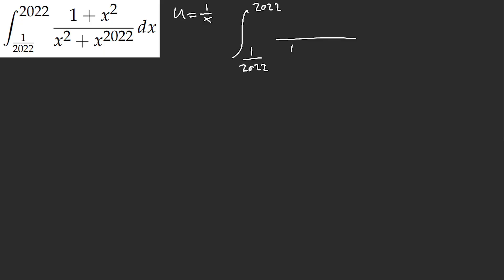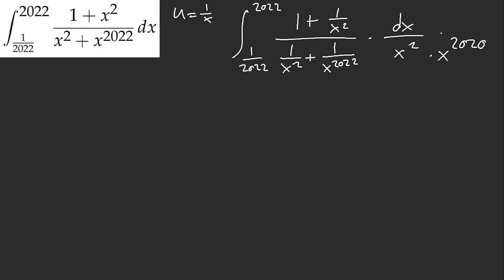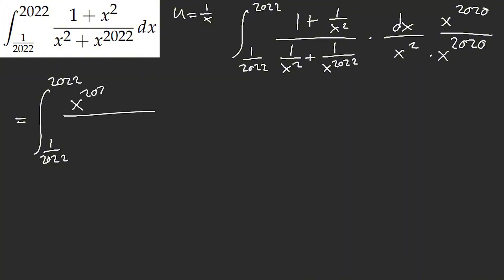We get 1 over x squared plus 1 over x to the 22nd, over 1 plus 1 over x squared. And don't forget that every time we do an inversion, we get an x squared factor. Now of course I want this back, so I need to multiply by x to the power of 2022 here, just to get this back. So what we end up getting is x to the power of 2020 plus x to the power of 2018, over x to the power of 2020 plus 1.